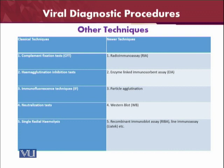After the origin of molecular biology, some new techniques have emerged, such as the radioimmunoassay, the enzyme-linked immunosorbent assay (ELISA), particle agglutination, western blot — which is very important for antigen-antibody reactions — and recombinant immunoblot assay and line immunoassay. All of these techniques can be used for the diagnosis of viruses.